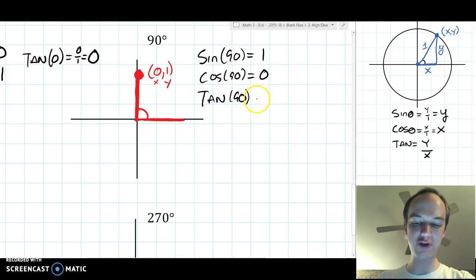And then tangent of 90, and we have to kind of trust in the math here, it would be y over x. That would be 1 over 0. That's undefined.